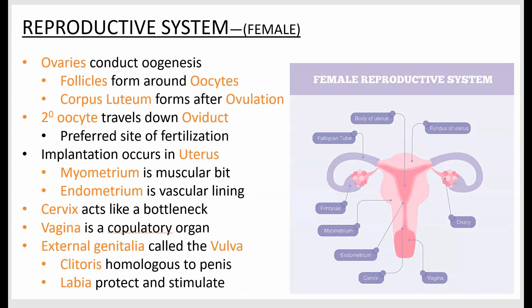Now the female reproductive system — again a top-down view. The ovaries are where oogenesis occurs. There are structures called follicles that form around the oocytes and hold them as they develop.